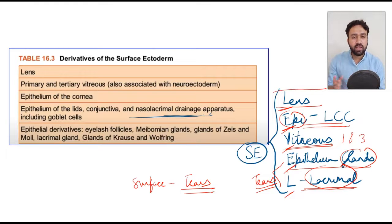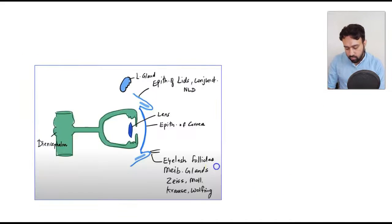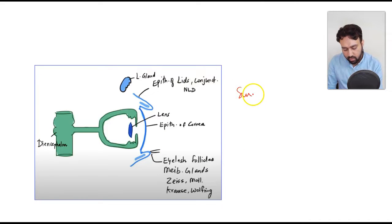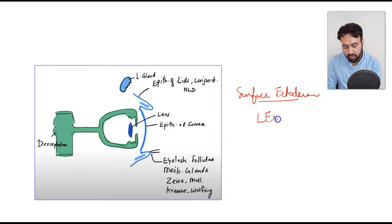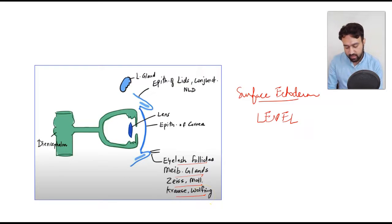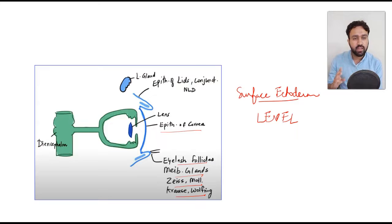You can remember surface ectoderm derivatives as: tears plus surface structures are derivatives of the surface ectoderm, and in addition you've got the lens. In the diagram, the blue areas are derivatives of the surface ectoderm: you've got LEVEL, the eyelash follicles, Meibomian glands, Zeis, Moll, and Wolfring glands, the epithelium of the cornea, conjunctiva, and lids, as well as the lacrimal apparatus and the lens.